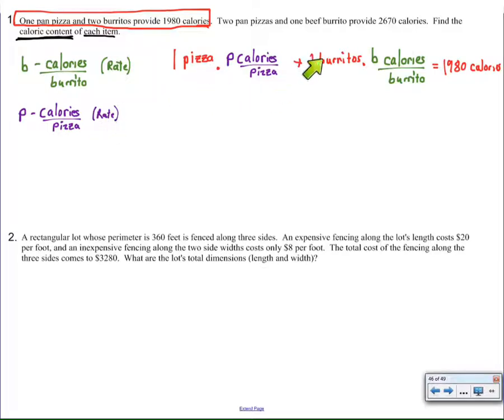Two burritos, fixed. B calories, unknown. Total calories for combined, 1,980, that's fixed.